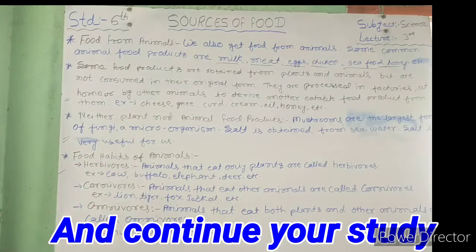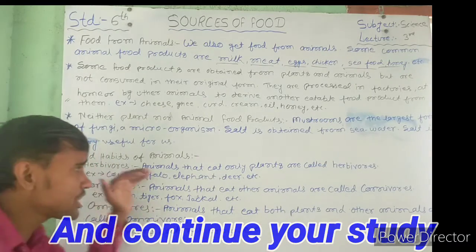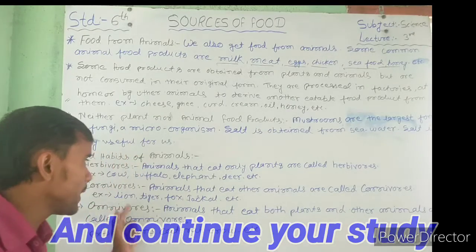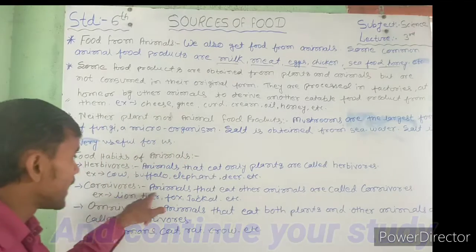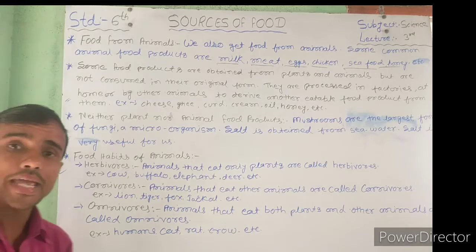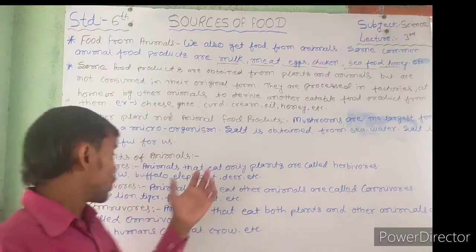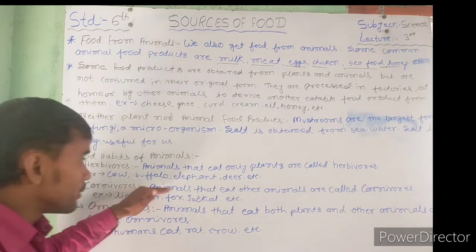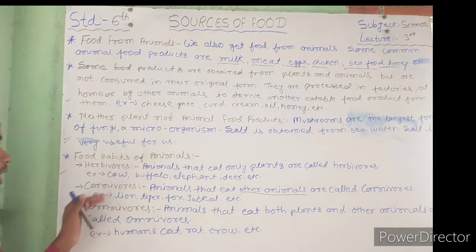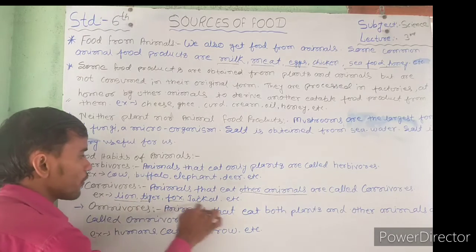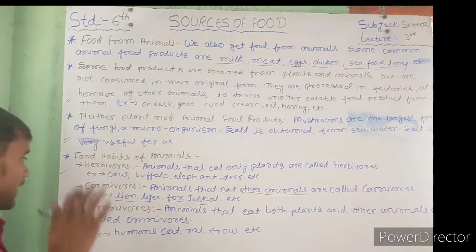Next is carnivorous. Carnivorous means animals that eat other animals — that is, animals that eat the flesh of other animals are called carnivorous. Examples of carnivorous animals are lion, tiger, fox, and jackal.